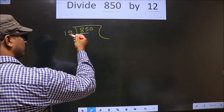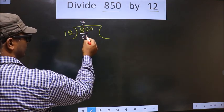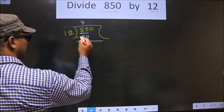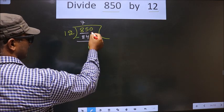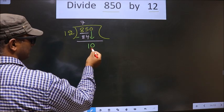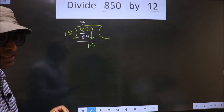A number close to 85 in the 12 table is 12 times 7, which is 84. Now we should subtract 85 minus 84, which is 1. Now you bring the beside number 0 down, so here we have 10. 10 is smaller than 12. This is where the mistake happens.